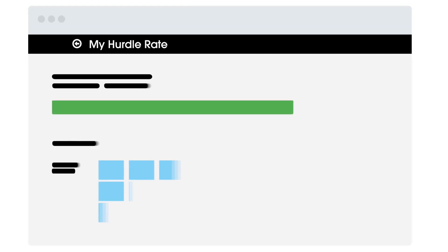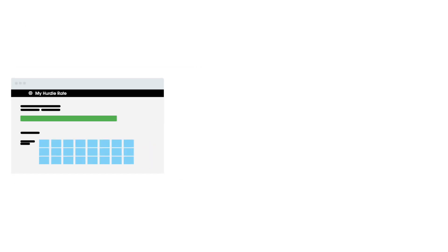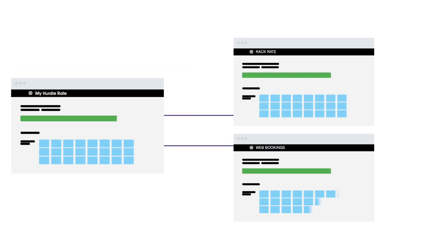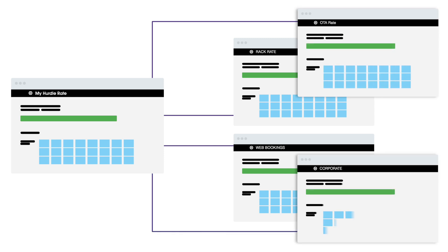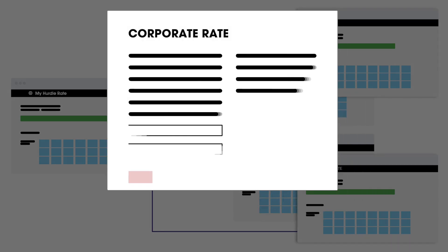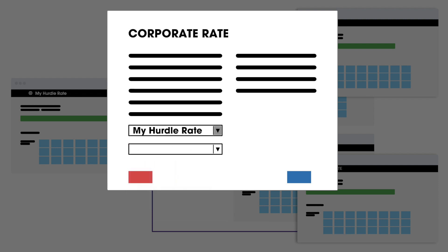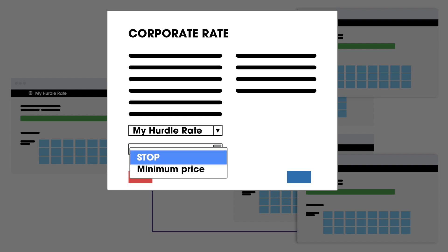All you have to do is create a new hurdle rate. Link the rack rates, the rates from the web reservation system, the online channels and the companies to the thus created hurdle rate. In the edit screen of every rate, select My Hurdle in the hurdle rate field and choose the mode Stop or Minimum Price.